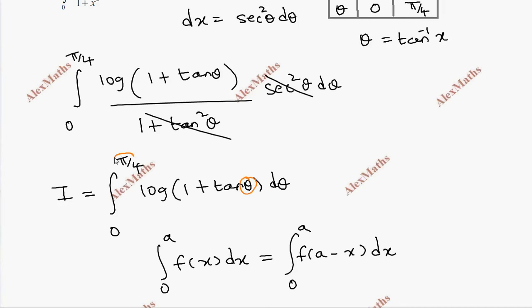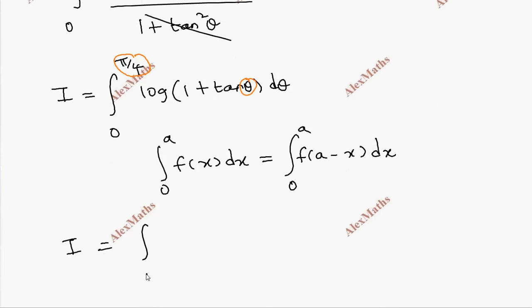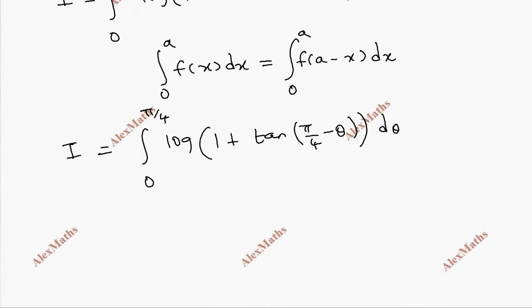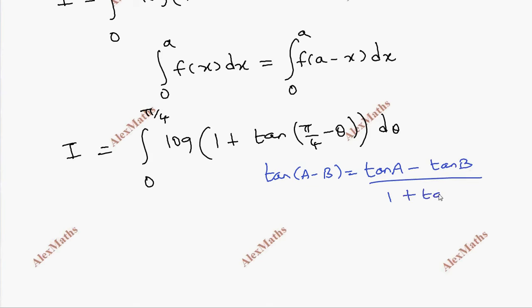Here a is π/4, so we replace θ with π/4 minus θ. So I equals integral from 0 to π/4 of log(1 + tan(π/4 minus θ)) dθ. Now apply the tan(a minus b) formula: tan(a minus b) equals (tan a minus tan b) divided by (1 plus tan a tan b).